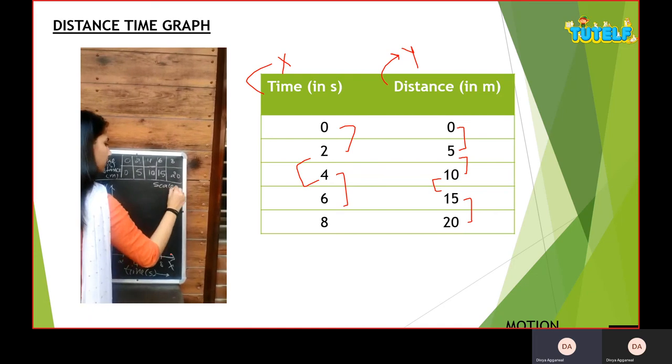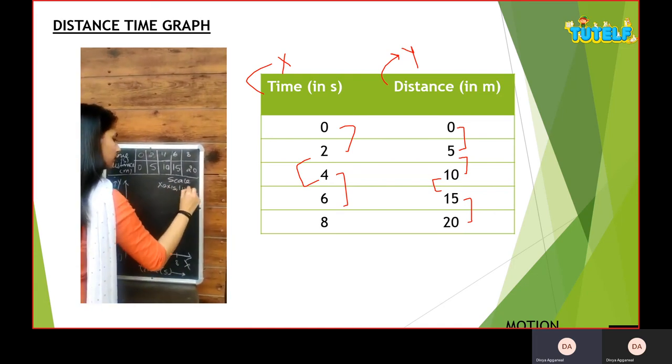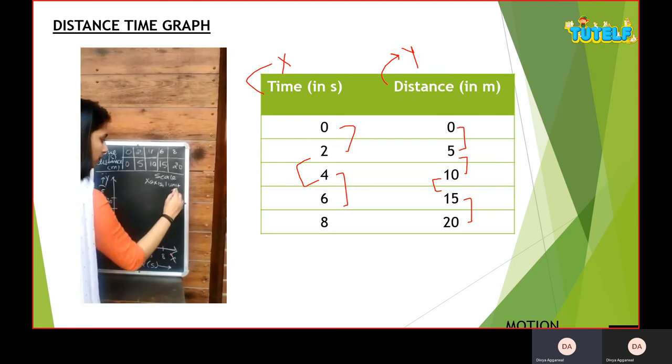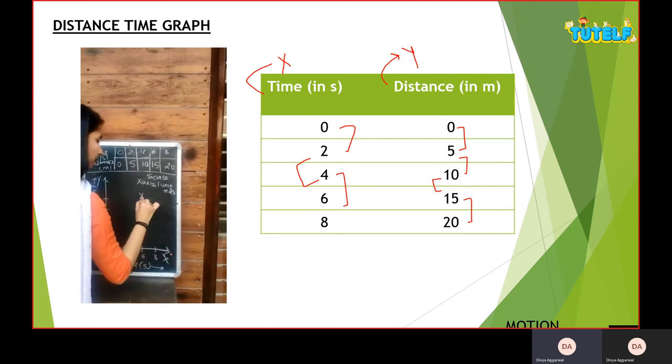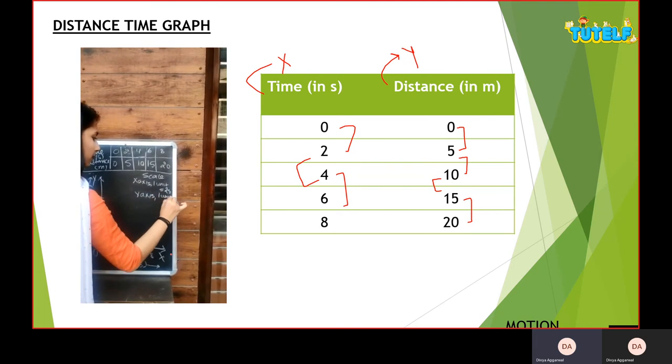Now we will do scaling. In scaling, we tell the scale. The scale of x-axis is 1 unit equals 2 seconds. And on y-axis, the scale of 1 unit is 5 meters.